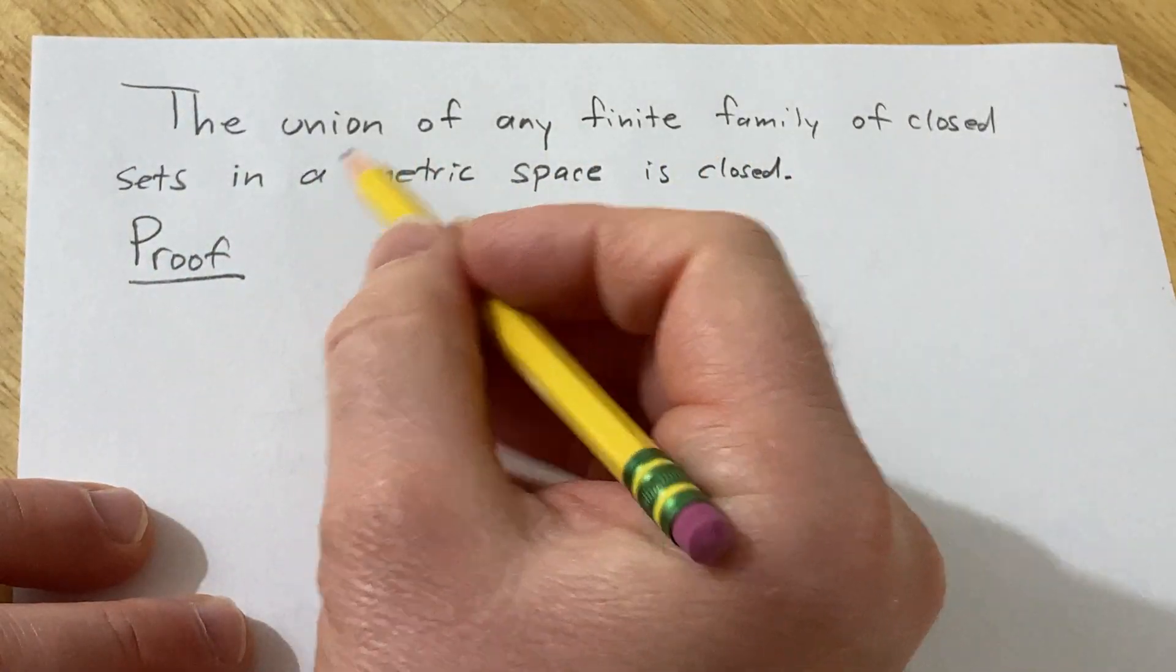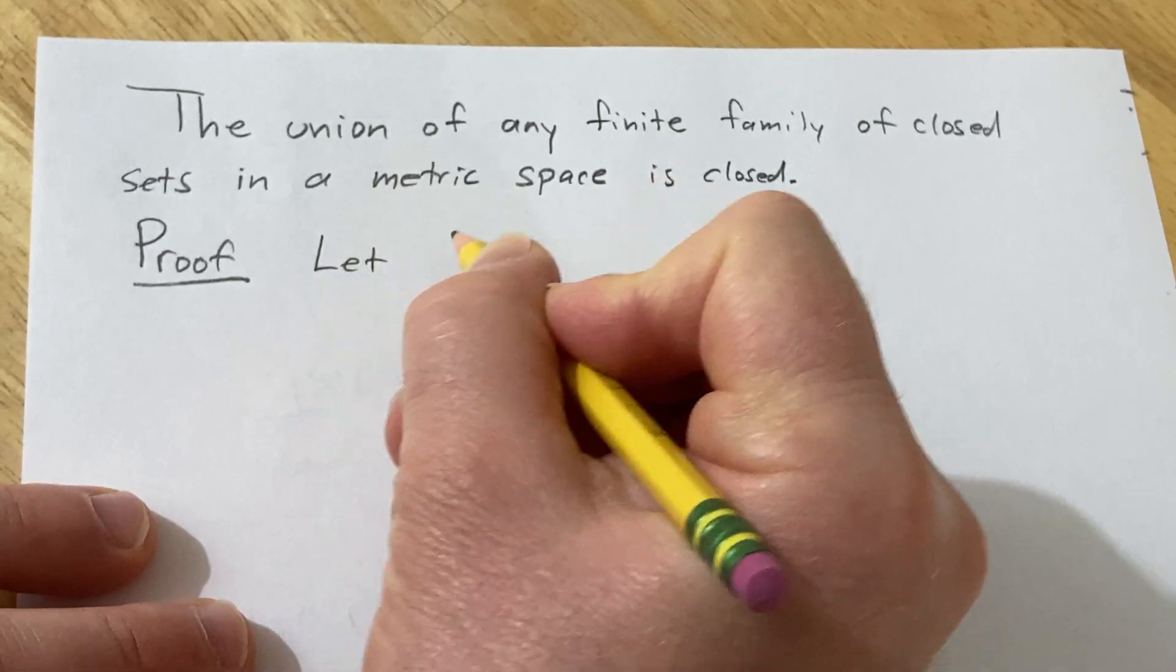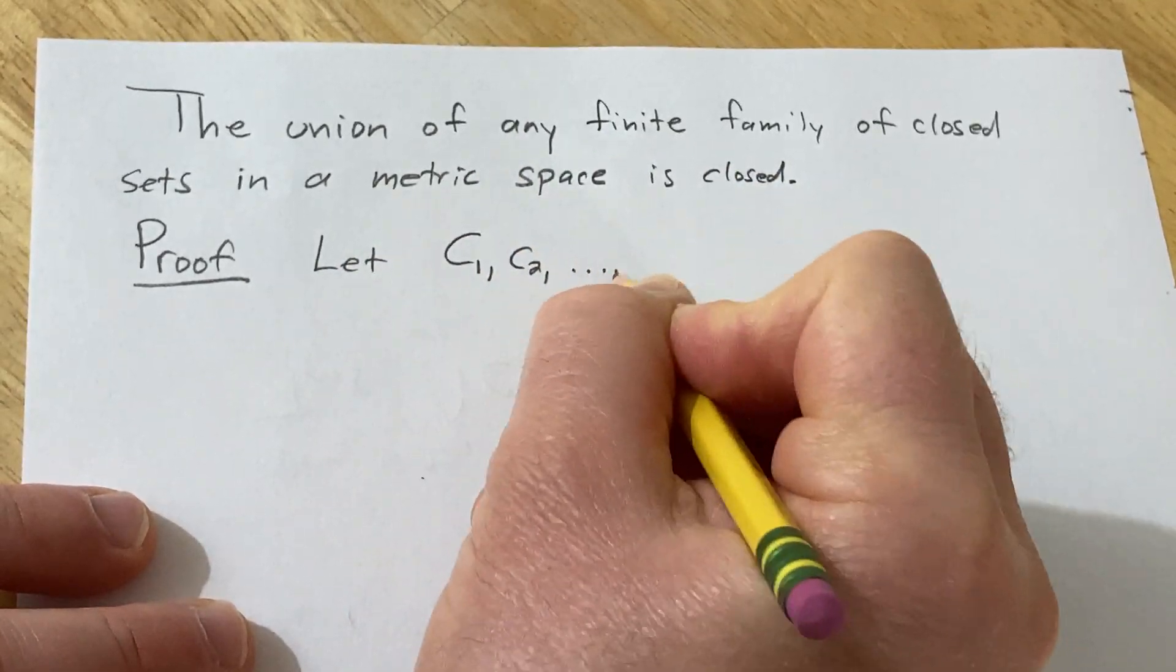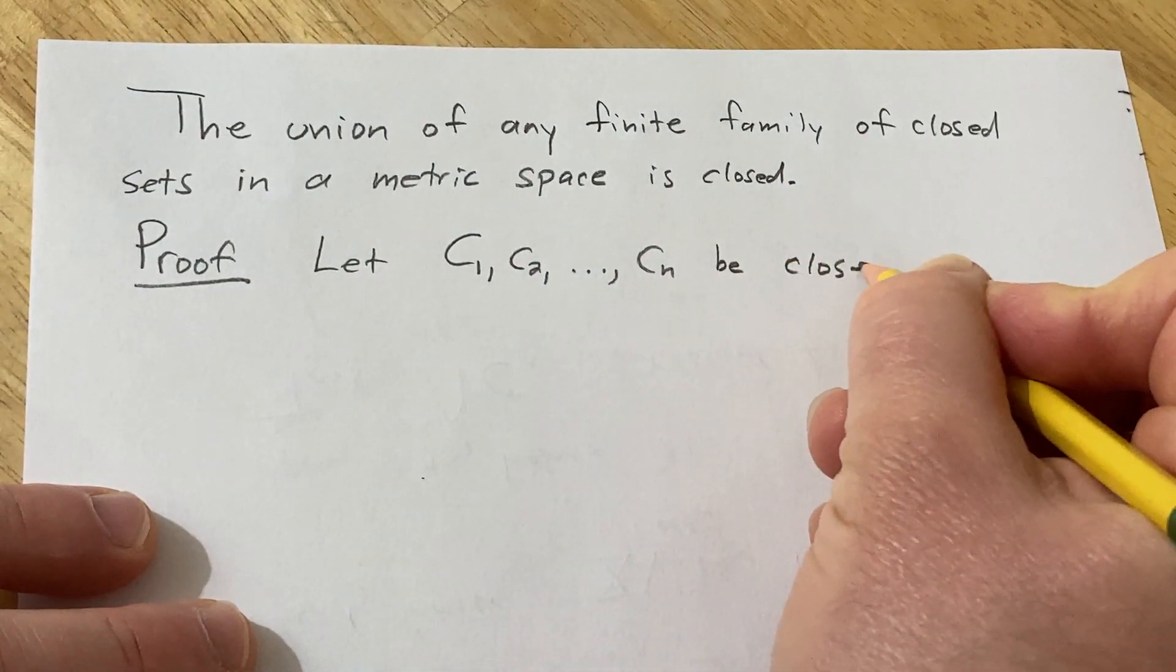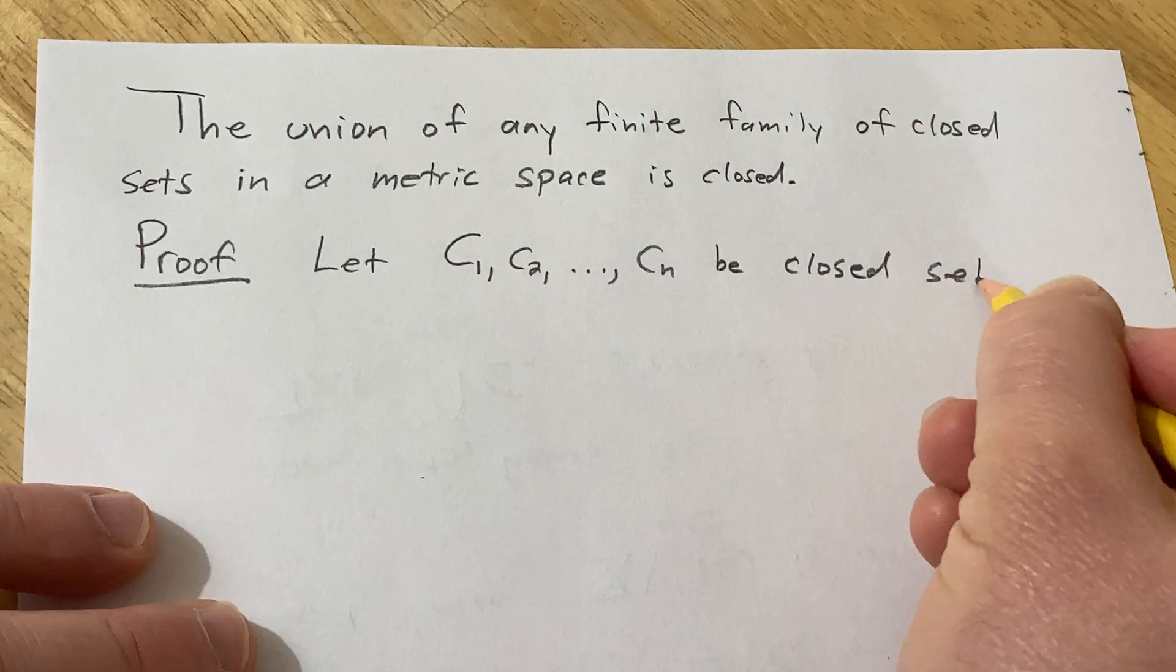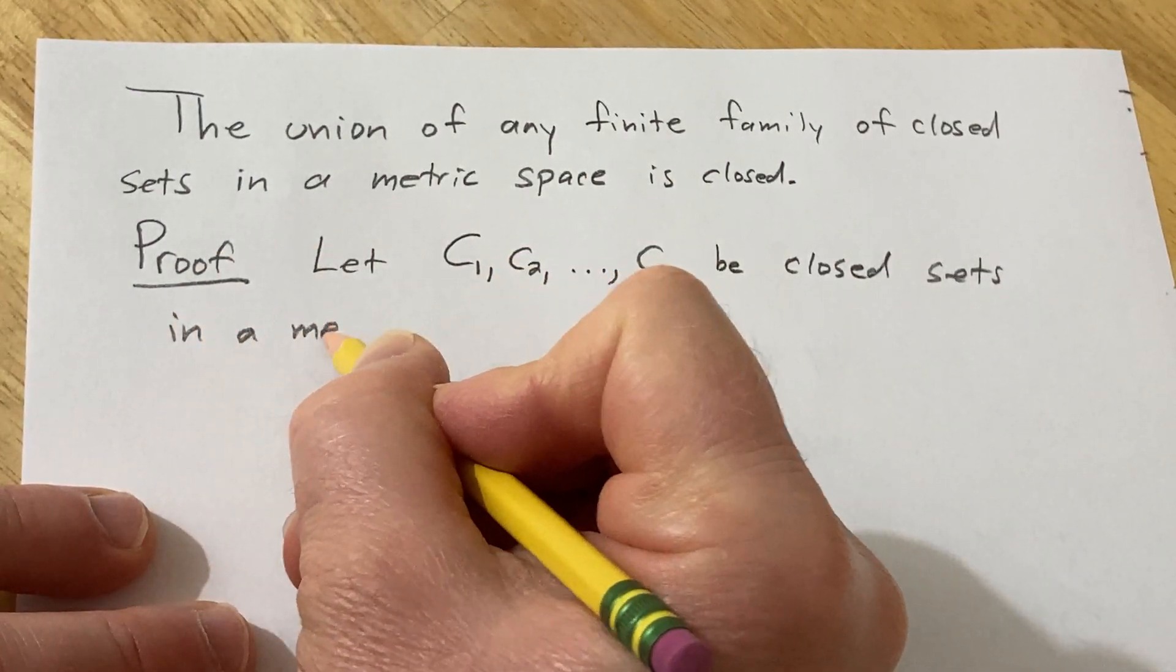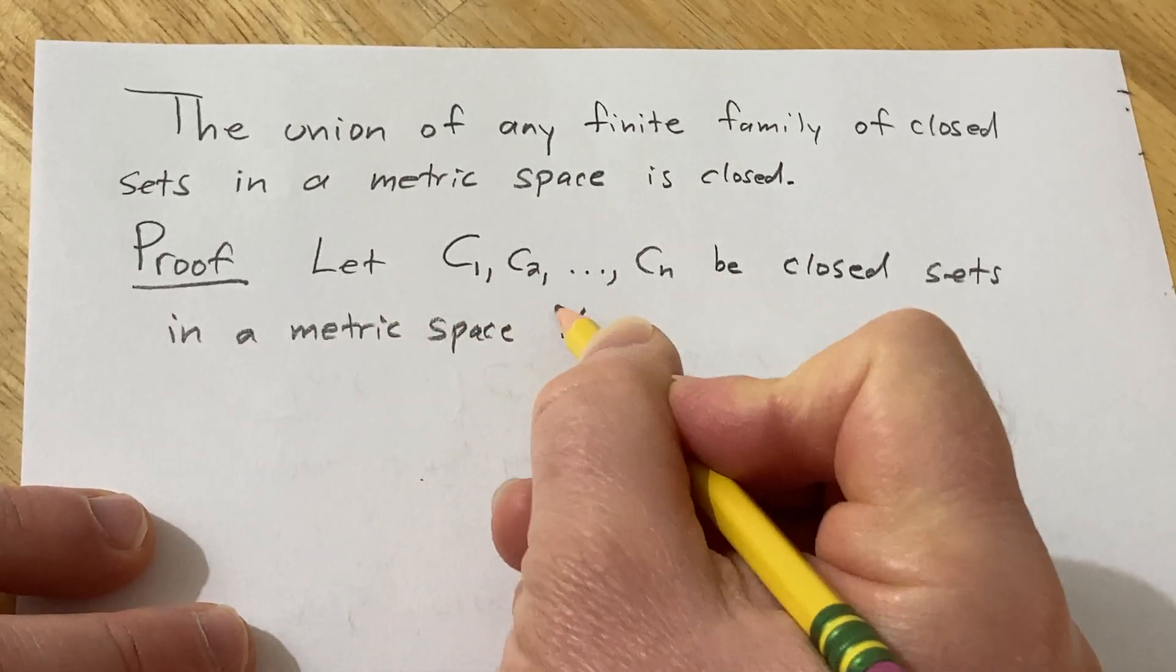So we'll start by having a finite family of closed sets. So let C sub 1, C sub 2, ..., C sub n be closed sets in a metric space, which we'll call capital X.